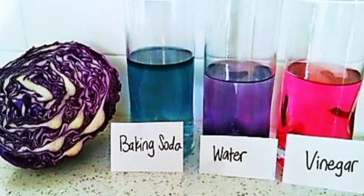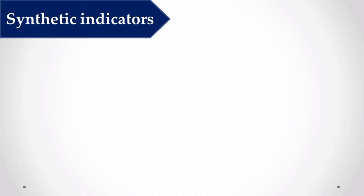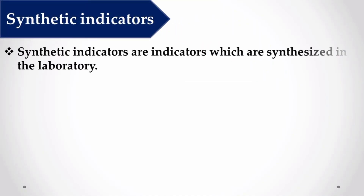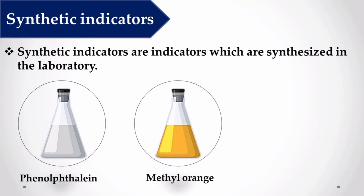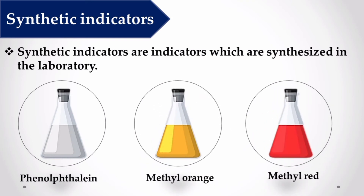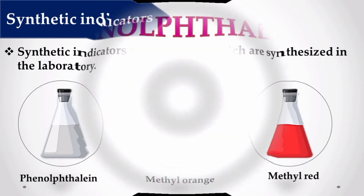Synthetic indicators are indicators which are synthesized in a laboratory. The most common synthetic indicators used in school laboratories are phenolphthalein, methyl orange, and methyl red. Phenolphthalein is a colorless indicator.